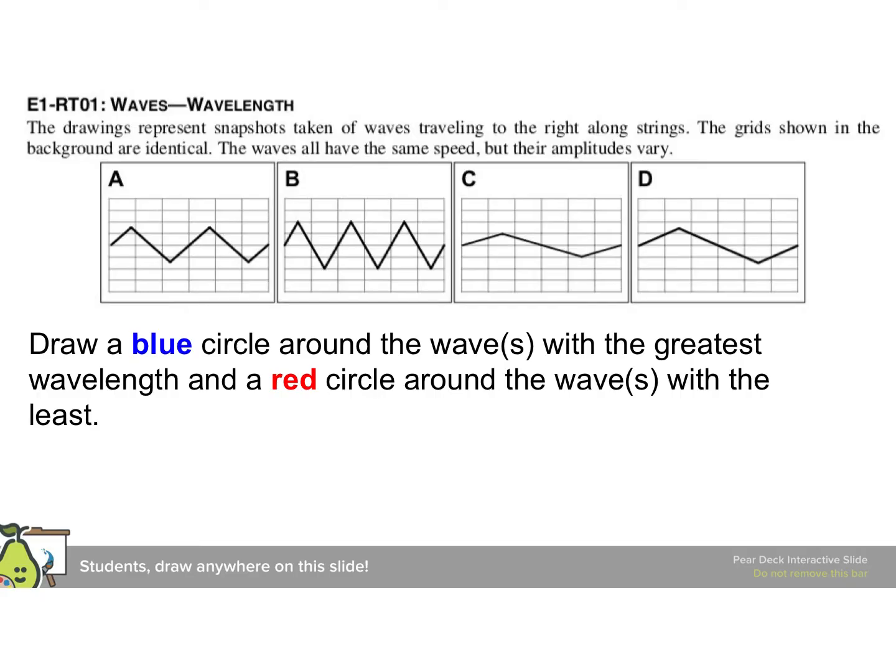The drawings here represent snapshots taken of waves traveling to the right along strings. The grids shown in the background are identical. And the waves all have the same speed, but their amplitudes vary. Draw a blue circle around waves with the greatest wavelength, and red circle around things with the least. Most importantly, they have the same speed, but they have varying amplitudes, which you can see from the graph, because the grids are identical.